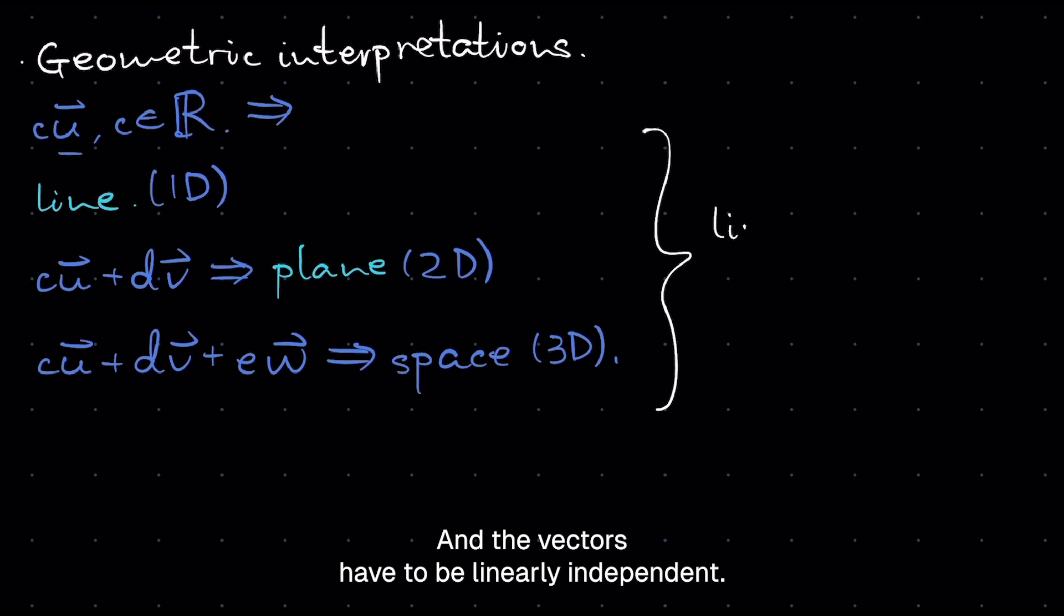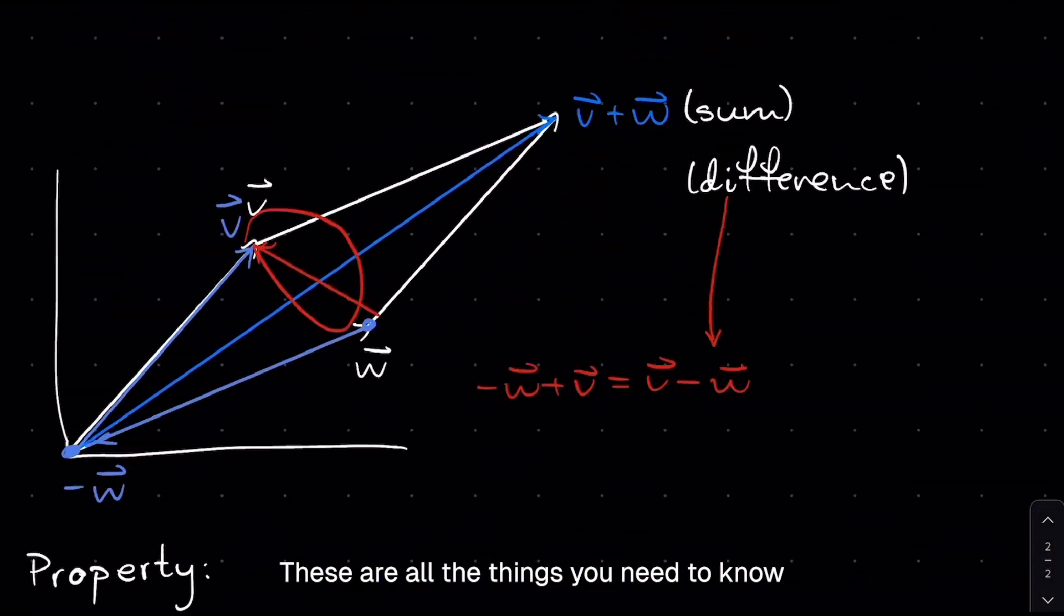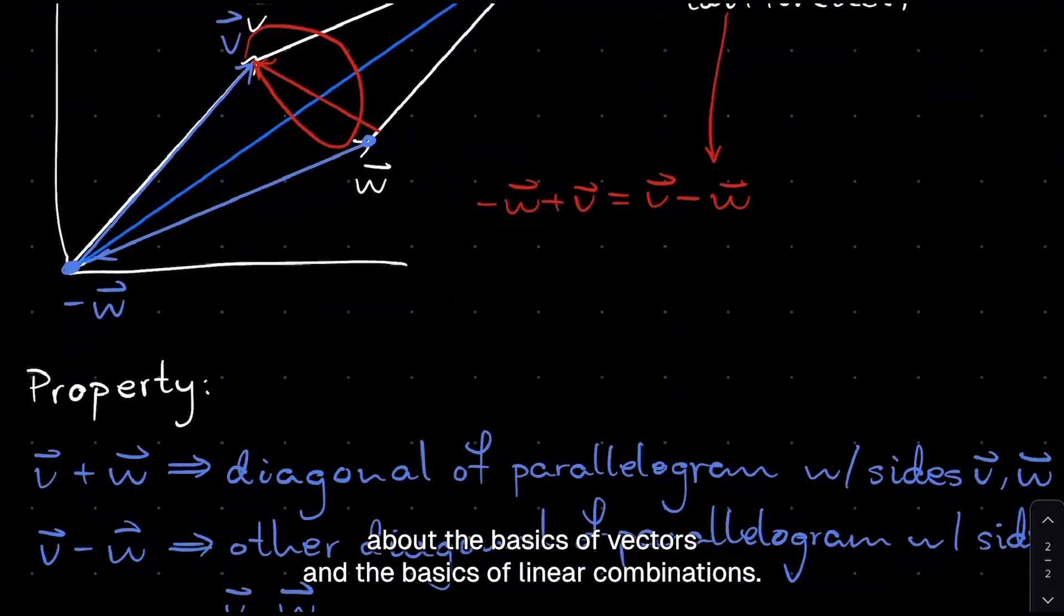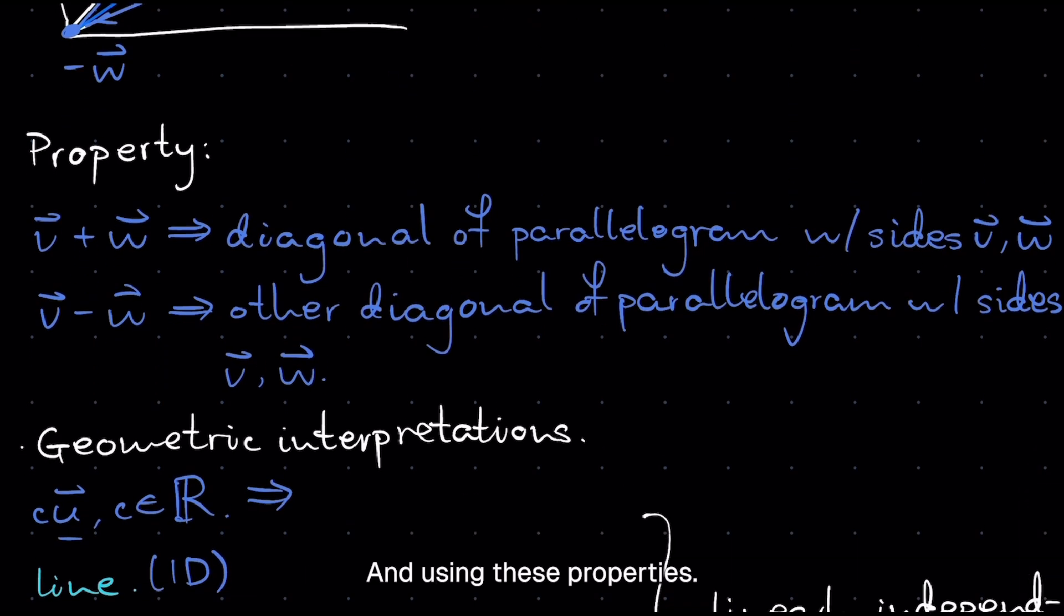Alright, so basically that's it. These are all the things you need to know about the basics of vectors and the basics of linear combinations. And using these properties, what we'll do in the next video is we're going to explore the dot product and the cross product. And we're going to talk about how dot products are related to length, and how we can use precise definitions of the dot products to derive more interesting properties of vectors. And we're actually going to prove the arithmetic mean and geometric mean inequality, which is a very widely used inequality in the mathematical community. So thank you for listening, and I wish to see you in the next lecture.